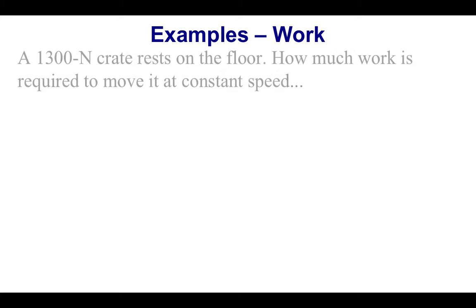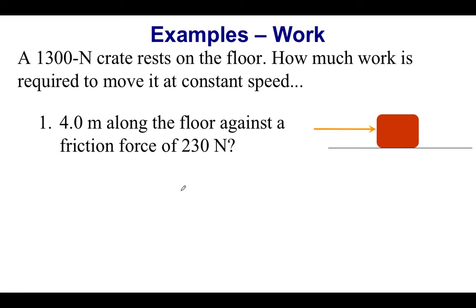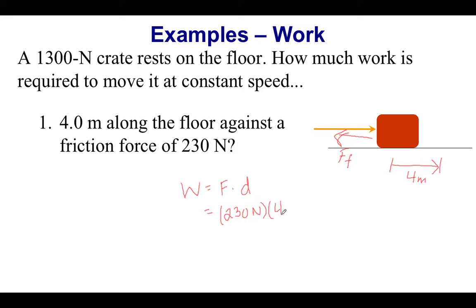For our first example, we have a 1300-newton crate resting on a floor. We want to know how much work is required to move it at constant speed. The frictional force opposes the motion of the box, and we're moving a distance of 4 meters opposite to friction. Work equals force times distance: 230 newtons times 4 meters gives us 920 joules. Since they are opposite directions, it is negative — negative 920 joules.